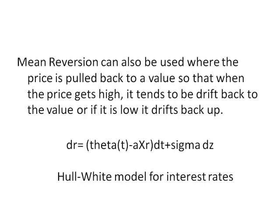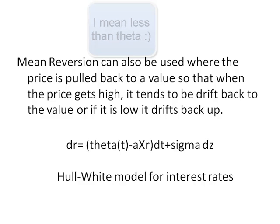For example, we have the Hull-White model, which is used when we're looking at interest rates. There you have dr — the change in interest rate — equal to a term that looks like log-normal: it has an r dt term plus a sigma dz which is our familiar noise term with an expectation of zero. The difference here is that we have theta(t) minus a times r, times dt. This means that when a times r is above theta, the change in r is going to be negative, so r is going to be dragged down. At the same time, if a times r is smaller than theta, then the trend term is positive, so that's going to push r up.